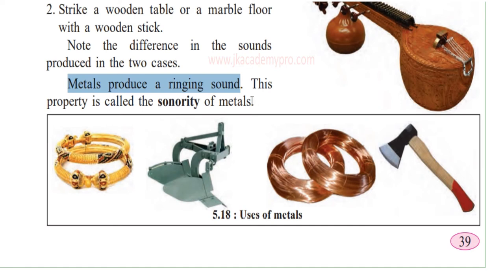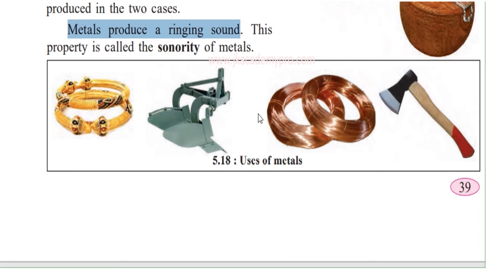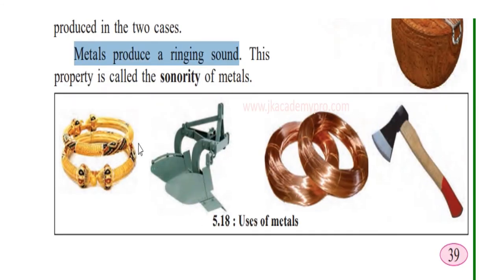This ringing, vibrating sound is called the sonority of metals. These were the properties of metals we just learned. Based on the properties of each metal, they are put to use — gold for ornaments, iron for tools like axes, copper for wiring. Depending on hardness, softness, conductivity, sonority, ductility — all these properties determine the uses of the metals.